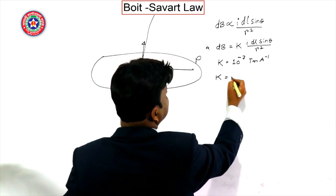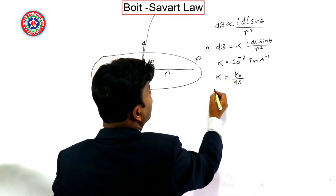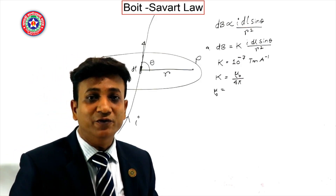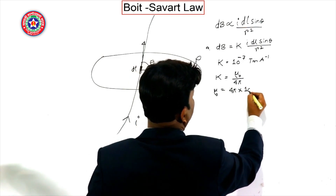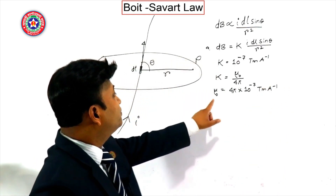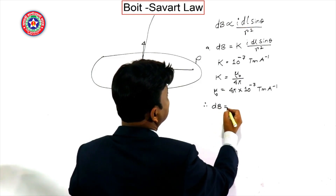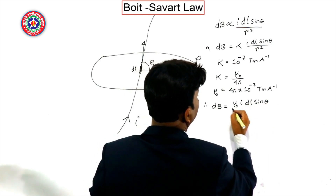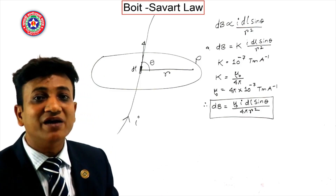We can write k as μ₀ / 4π, where μ₀ is the magnetic permeability of vacuum space. Its value is 4π × 10⁻⁷ tesla·meter per ampere. Substituting the value of k, we get: dB = μ₀ · I · dl · sinθ / (4π · r²). This is the equation of the Biot-Savart law, giving the infinitesimal magnetic field dB at point P.